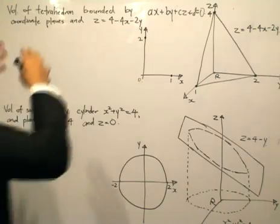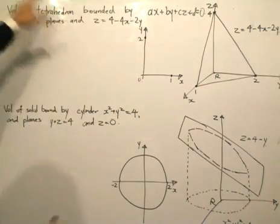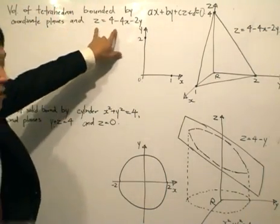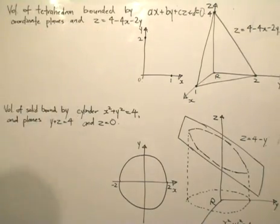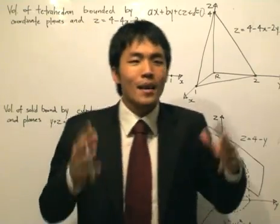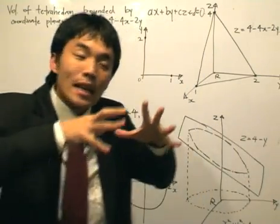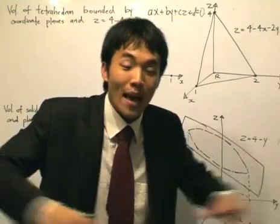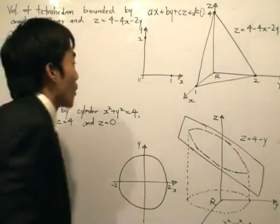Alright, so remember we want to find the tetrahedron bounded by this equation over here which is again an equation of a plane and the coordinate planes. So what do you know about equations of planes or basically equations of planes in general? They extend infinitely further away. As in you got the space, you got the plane and they extend an infinite amount.